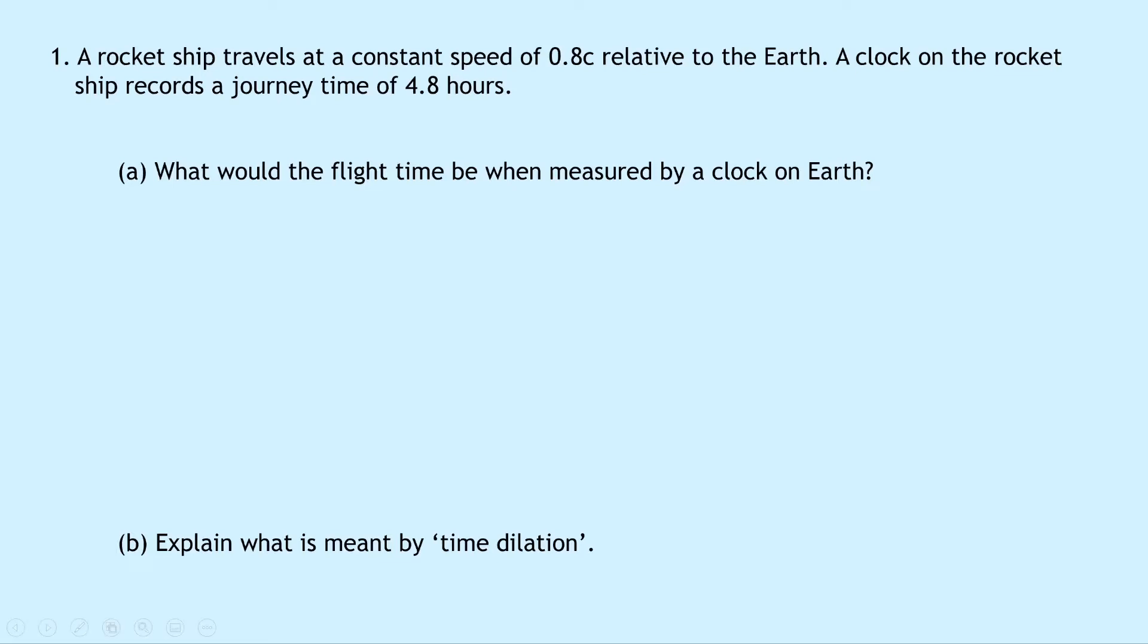Part A says: what would the flight time be when measured by a clock on Earth? Well, what we're really asked for in part A is the relativistic time, which is t' or t prime, because we're told in the question that a clock on board the rocket ship, which is in the same frame of reference as the moving object, records a time of 4.8 hours. So that's going to be your proper time. So what we need to do is write down what we know from the question. We're trying to find what t' is. We know that t equals 4.8 hours and we know that v equals 0.8c.